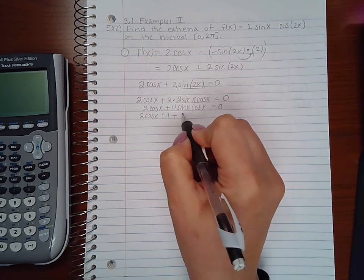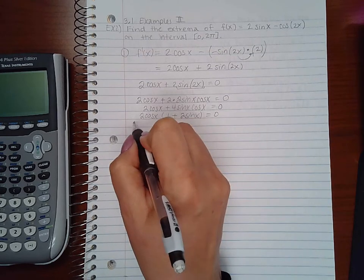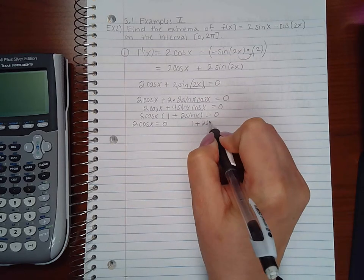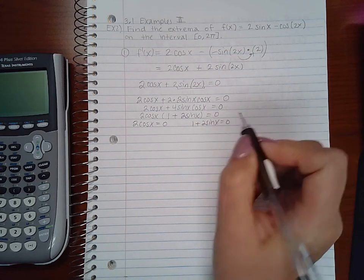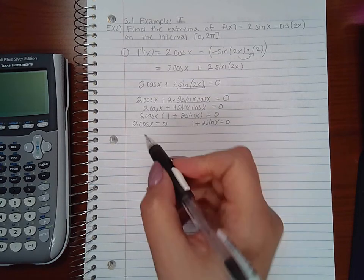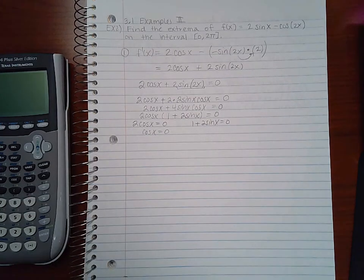So I end up with 2cos(x)(1 + 2sin(x)) = 0. Now if I set this factor equal to 0 and this factor equal to 0, I will get my two solutions. So here if I divide by 2 on both sides, I still get cosine equal to 0.